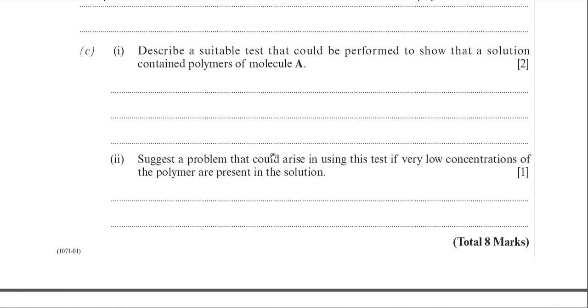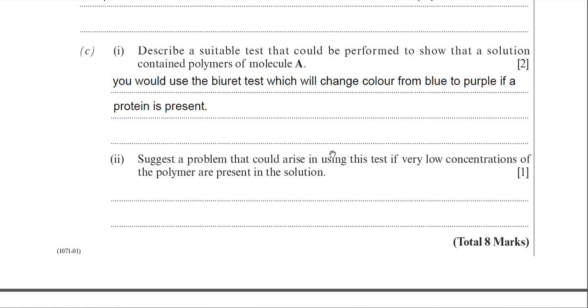Just in passing, you need to know about the Benedict's test for reducing sugar. That test, you actually need to heat and boil. But back to the Biuret test, no heat involved, and the colour change goes from blue to purple or violet. So I've just said you would use the Biuret test, which will change colour from blue to purple if a protein is present.